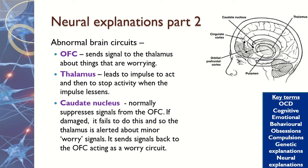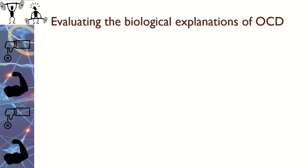Therefore, this doesn't stop patients from doing their compulsive behaviours. So we've got the OFC — the cognitive thought processes — the thalamus, which leads to the behavioural processes, and then a lack of activation in the caudate nucleus. Remember these explanations don't have to be thought about separately; you might just be asked about the genetic explanation or just the neural explanation.